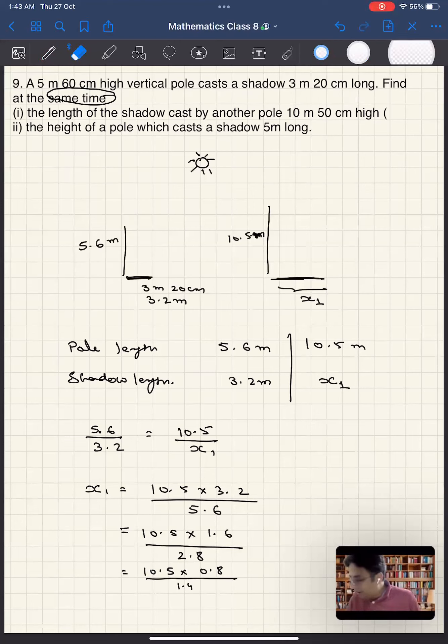Again, it is divisible by 2, so it is 10.5 into 0.4 divided by 0.7. This is divisible by 7, so I will just make it 105 divided by 7, so 15, and 0.4 is equal to 6.0. So 6.0 meters would be the length of the shadow.